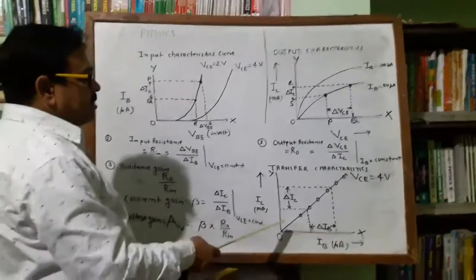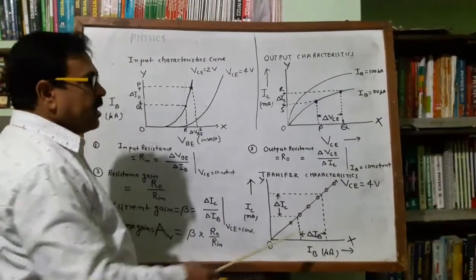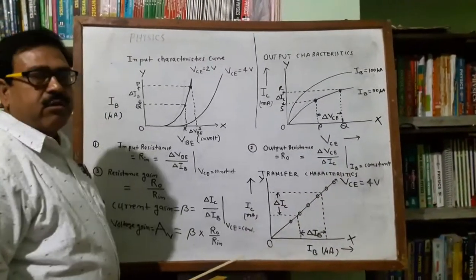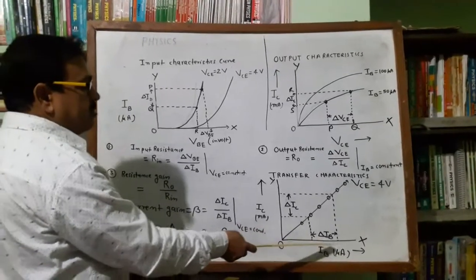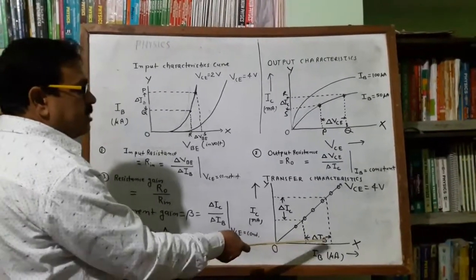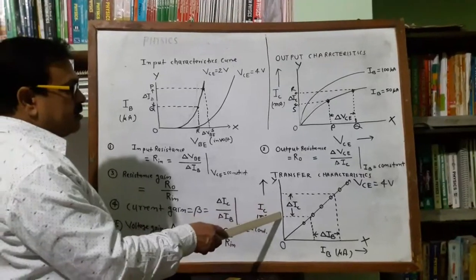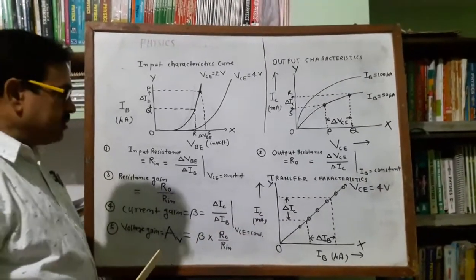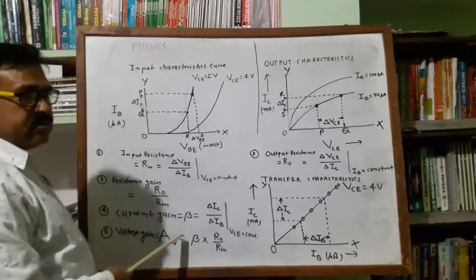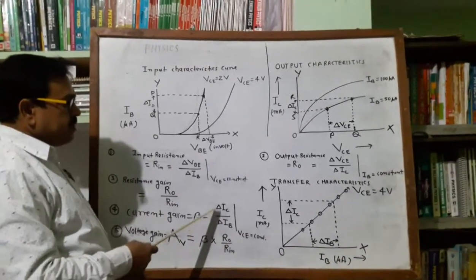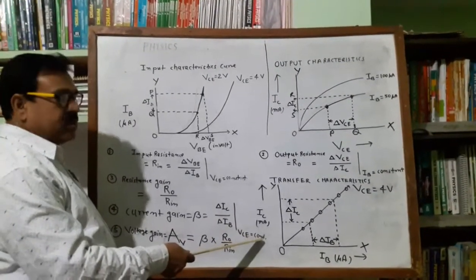In the transfer characteristic, the main point is that for given values of base current and collector current, we get a straight line, with collector-to-emitter voltage maintained constant. With the help of two corresponding values for two different values of the base current, we calculate the change in base current and the corresponding change in collector current from the graph. Current gain, denoted by the symbol beta, is defined as the ratio of the small change in collector current to the small change in base current, when collector-to-emitter voltage is maintained constant.